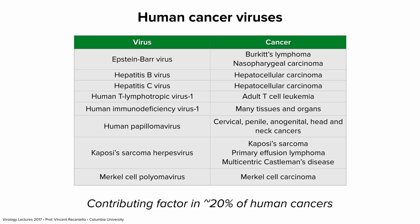The lesson for today: transformation and oncogenesis are not required for the replication of any virus — with an asterisk. For most viruses this is true; they don't need to transform cells or cause cancer. However, someone wrote to tell me about a virus of fish that causes tumors where tumor formation is actually required for spread of the virus. I'll tell you about that later, but for most viruses transformation and oncogenesis are not required.